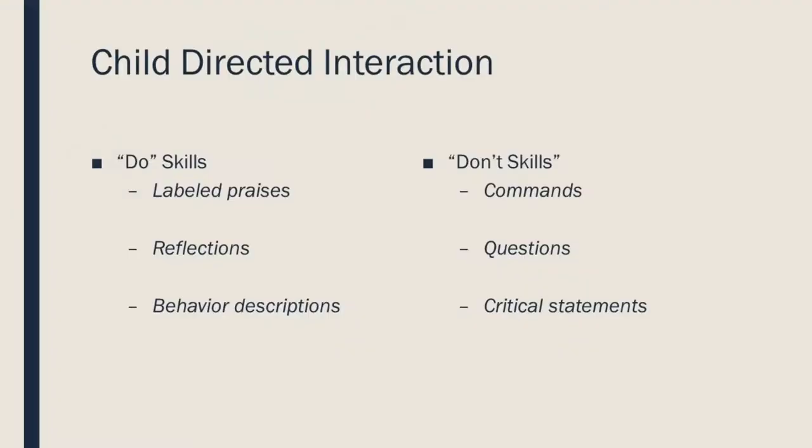Examples of questions as don't skills would be 'Can you tell me what this color is?' or 'We're building a big house, aren't we?' — they may seem really innocent, but they take away from the child directing the interaction.